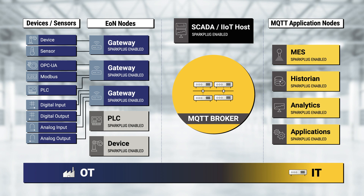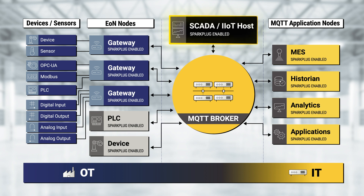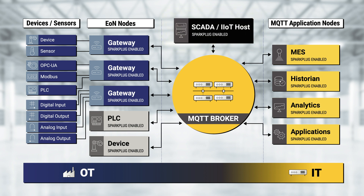Number one: primary application. The primary application is a critical piece of software for any Sparkplug infrastructure. It's also called SCADA host or IIoT host. People familiar with SCADA systems know that there are critical pieces of software like SCADA systems that provide supervision of everything that happens on the shop floor or any system you want to monitor. You have the surveillance component but also you can act on specific things.